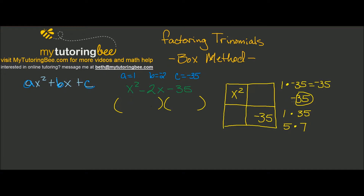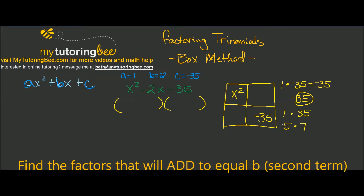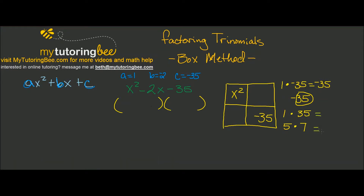Now I have to work with that negative sign. I'm looking for the pair of factors that will add to equal b, which is negative 2. None of the pairs add to negative 2 as-is, but if I make one positive and one negative — positive 5 and negative 7 — they multiply to give negative 35 and add to give negative 2. So those fill the remaining boxes as positive 5x and negative 7x.